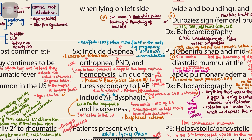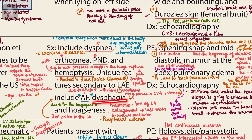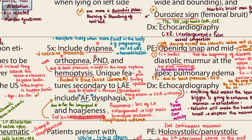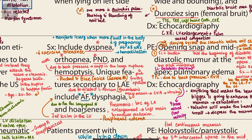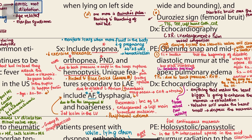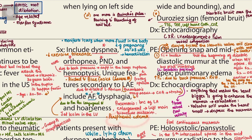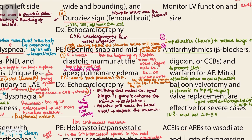Unique features secondary to left atrial enlargement include: atrial fibrillation from atrial stretching; dysphagia from the enlarged heart pressing on the esophagus; hoarseness from pressure on the recurrent laryngeal nerve; thrombosis which can result in cerebrovascular accident and stroke; and pneumonia from left atrium enlargement causing left main bronchus occlusion. Key symptoms to remember are dyspnea, orthopnea, PND, hemoptysis, atrial fibrillation, dysphagia, hoarseness, blue facies, peripheral edema, and pneumonia.